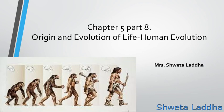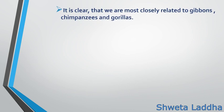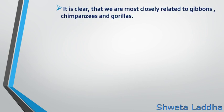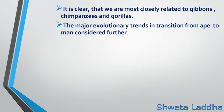Hello students, welcome to part 8 of chapter 5, Origin and Evolution of Life. We are going to study today how human evolution occurred. It is clear that we are most closely related to apes like gibbons, chimpanzees and gorillas. The major evolutionary trends in transition from ape to man are considered further.